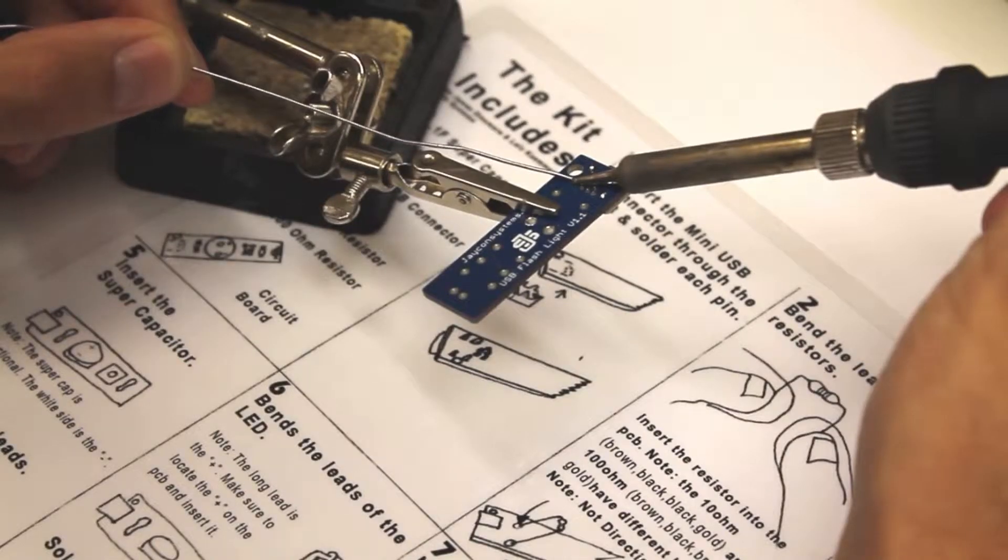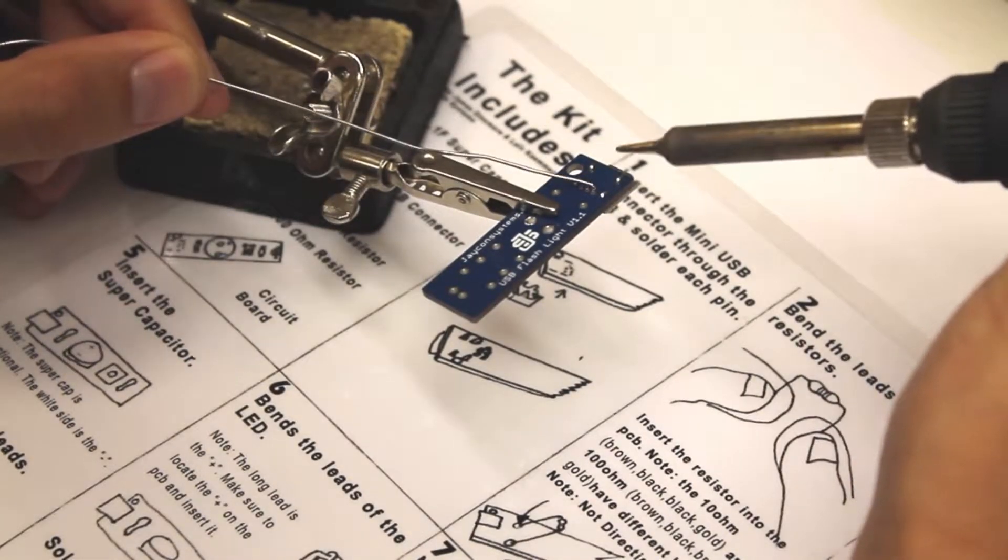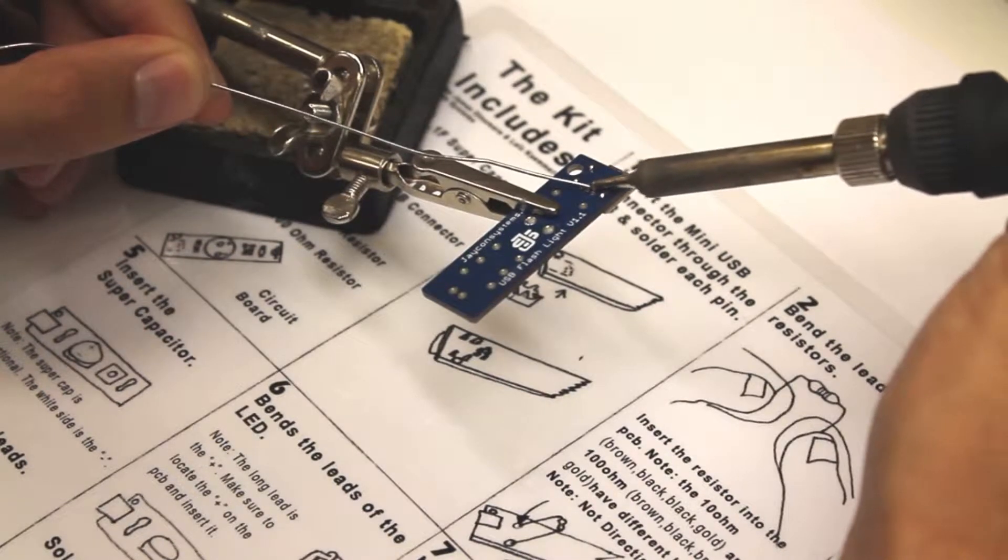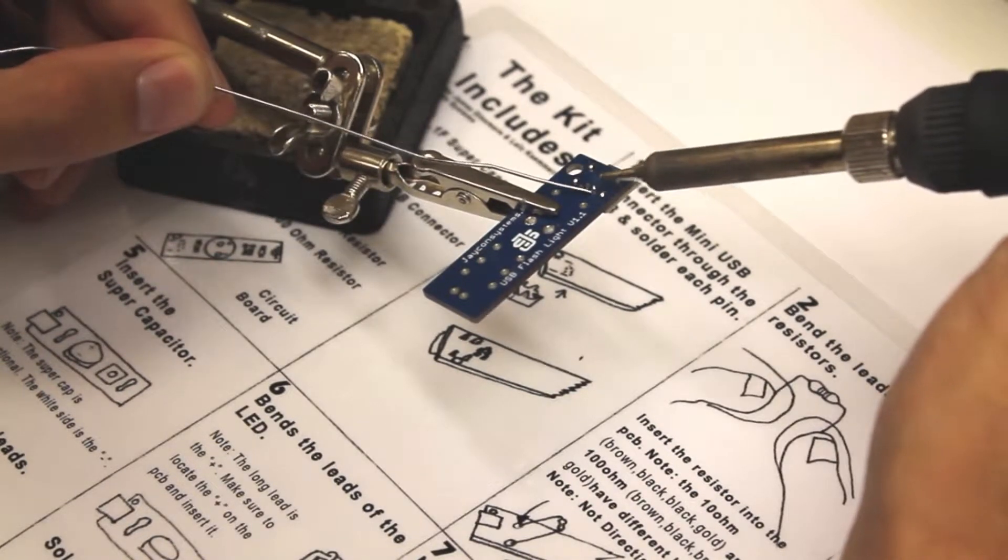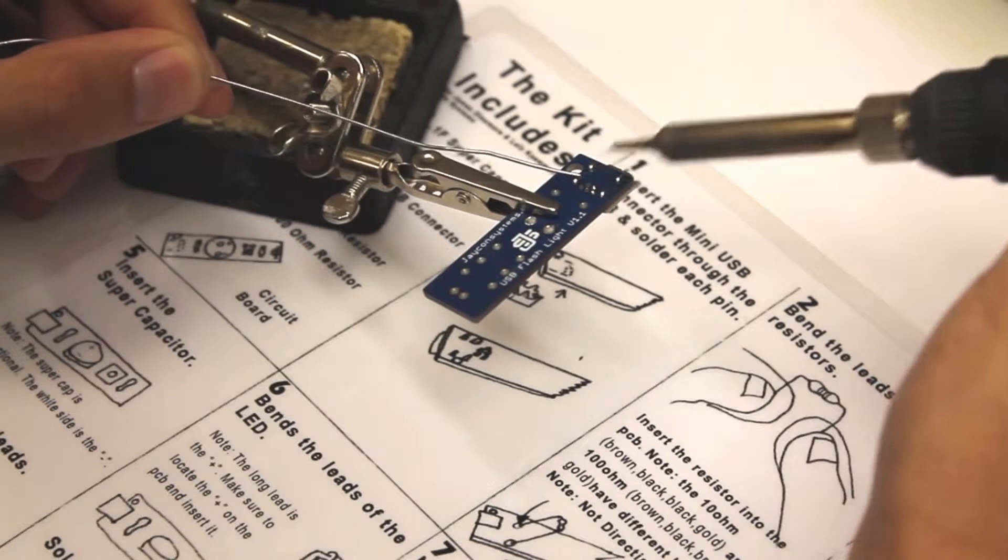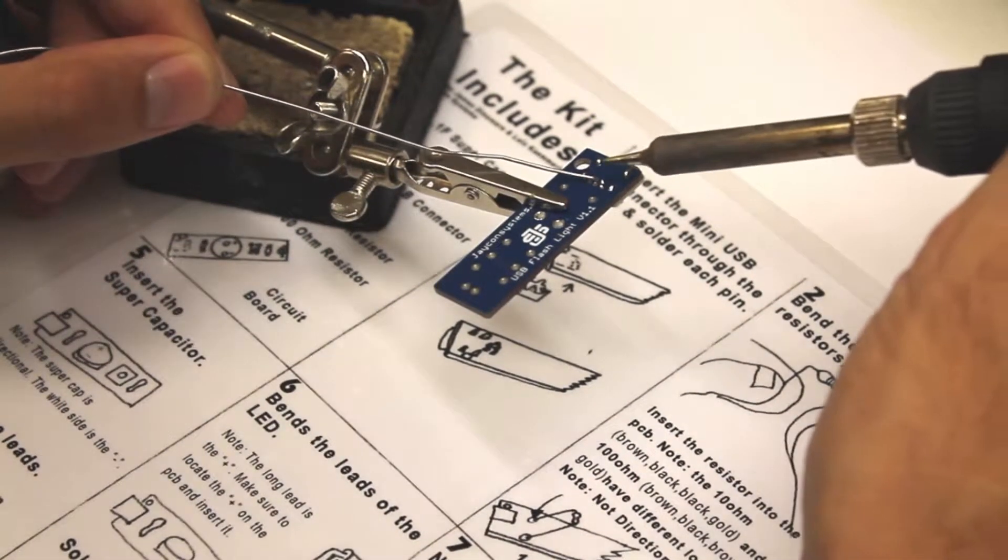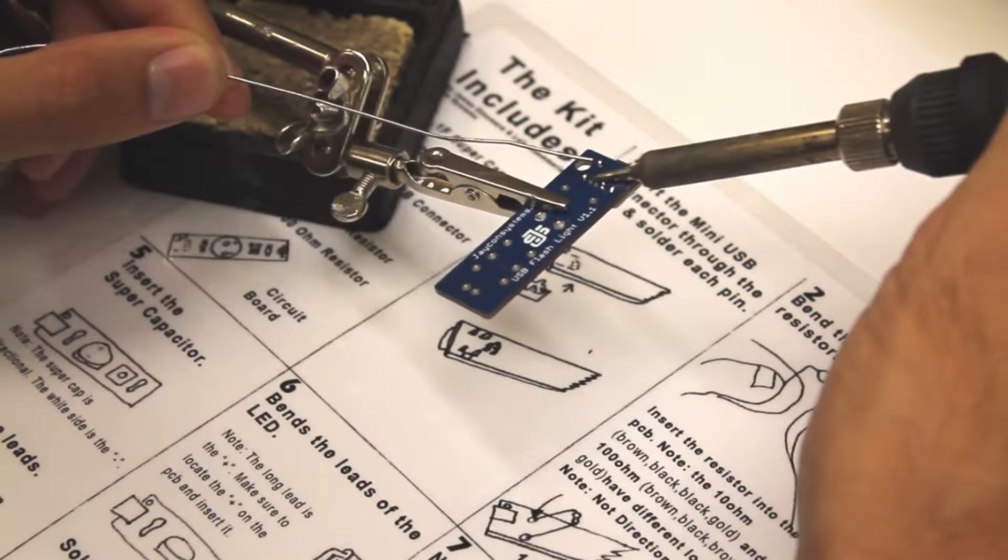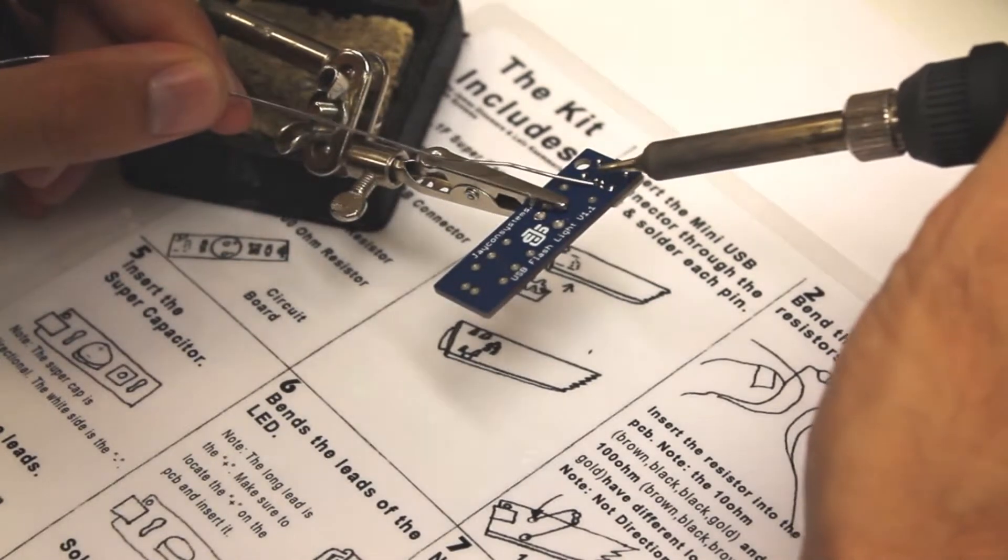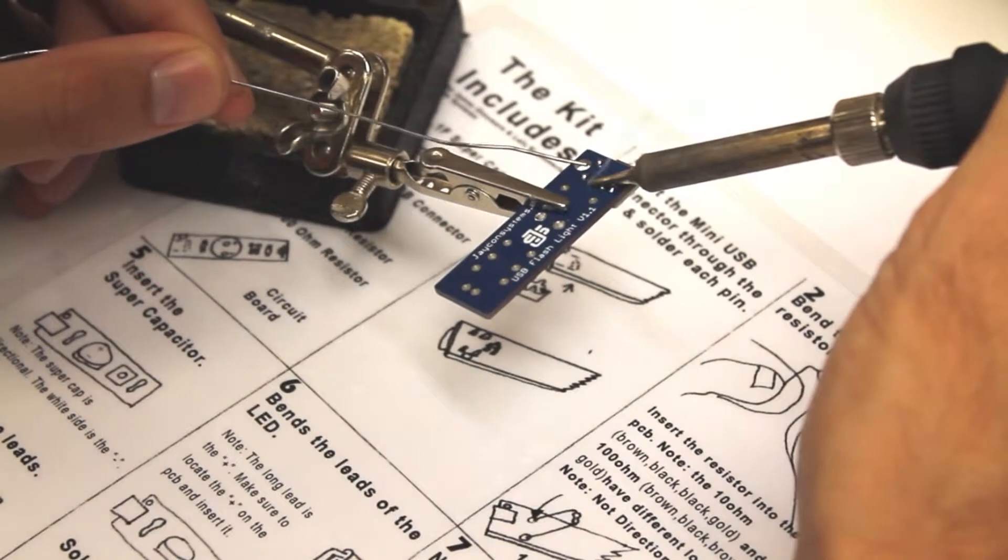Again, make sure that you're touching the soldering iron to the pin and also the solder at the same time. You must have heat on all of the connectors. These five connectors here are really difficult, so take your time. If they get jumped together, don't worry. You can always remove the solder and start over.